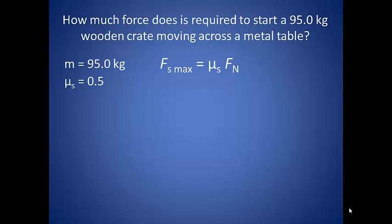So how much force is required to start a 95 kg wooden crate moving across a metal table? We are given the mass of the crate, which we need in order to find the normal force. And looking at our table, we see that the coefficient of static friction for wood moving along metal is 0.5.